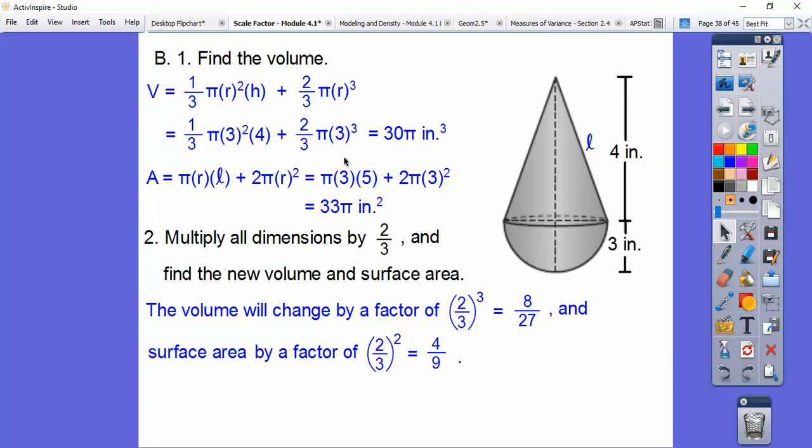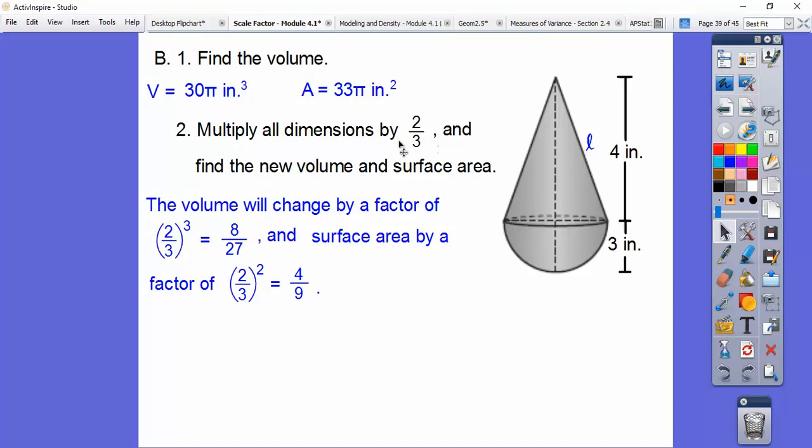Let me just slide that up. I'm going to put the volume and surface area answers just to save some room. So volume, we've got 30 pi, surface area was 33 pi. Now we're going to multiply the volume times 8 27ths, multiply the surface area times 4 9ths and calculate the new answers.